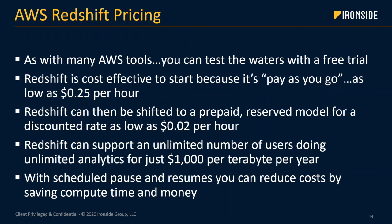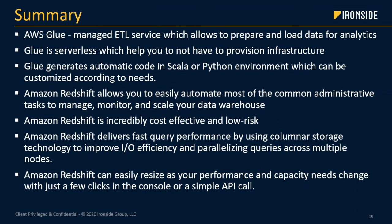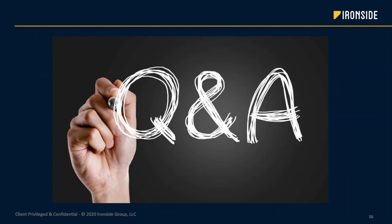Quick summary since we want to get to Q&A. AWS Glue is a managed ETL service to prepare and load data for analytics. It's serverless, you don't have to provision infrastructure, it generates automatic code, and you only pay for what you use when it runs. Redshift allows you to automate most common administrative tasks to manage, monitor, and scale your data warehouse. It's cost-effective and low-risk, delivers fast performance using MPP and columnar storage technology to improve IO efficiency, and can resize dynamically as your performance and capacity needs change. Glue and Redshift truly are key components of a complete AWS cloud analytics platform.